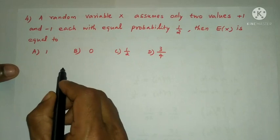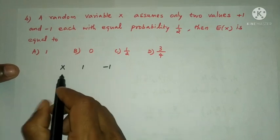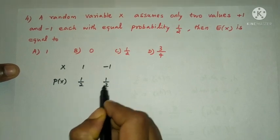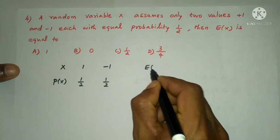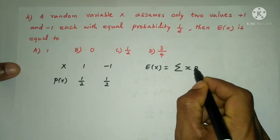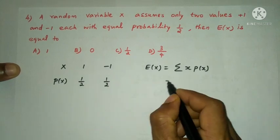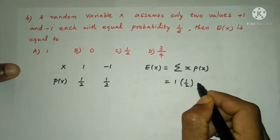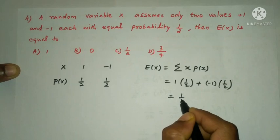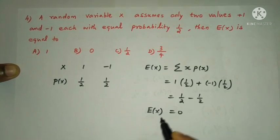X takes values +1 and −1, each with probability 1/2. E(X) = summation of X × P(X) = (+1)(1/2) + (−1)(1/2) = 1/2 − 1/2 = 0.